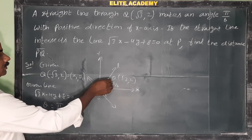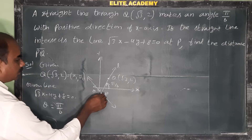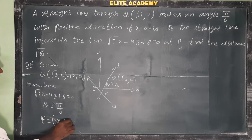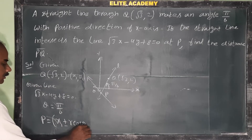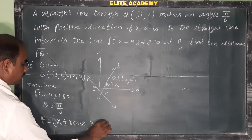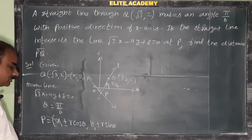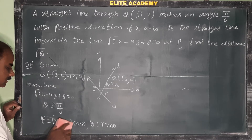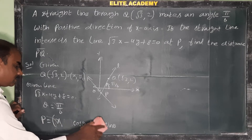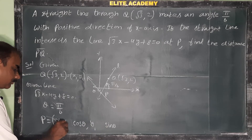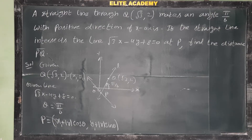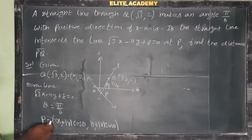The distance from point Q to point P: the formula for point P is: P = (x₁ + r·cosθ, y₁ + r·sinθ), where r is the parameter. Taking modulus of r, we get P = (x₁ + |r|·cosθ, y₁ + |r|·sinθ). We need to find |r|, which gives us the distance PQ.